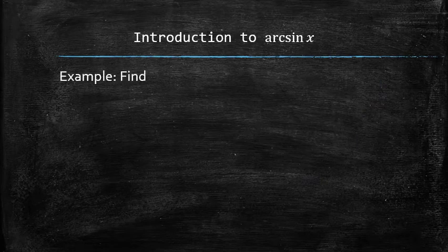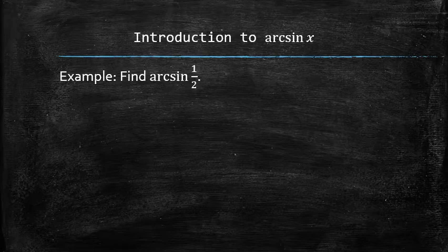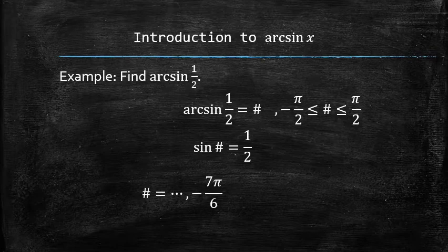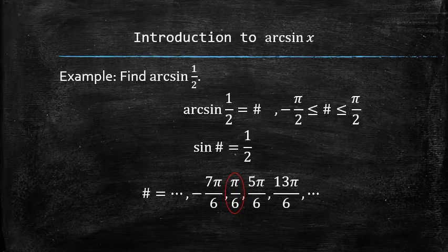For example, let's find the value of arcsin of 1 half. We are looking for some value that is between negative π over 2 and positive π over 2 such that sin of that value is equal to 1 half. There are infinitely many values for which sin is equal to 1 half. However, only one of them is in the desired interval. Therefore, arcsin of 1 half is π over 6.